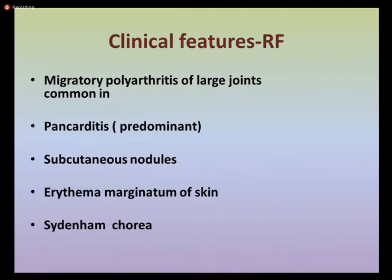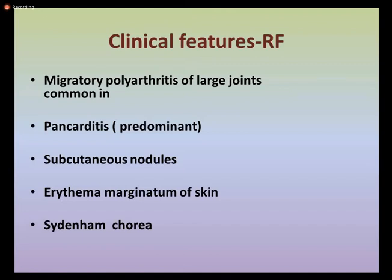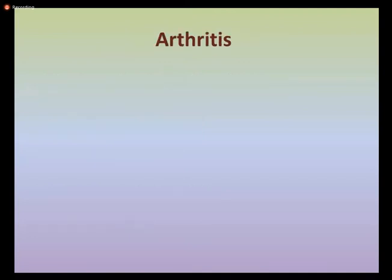The major clinical features of rheumatic fever include migratory polyarthritis of large joints — meaning the pain spreads from one joint to another. There is pancarditis, considered the predominant clinical feature. There is also formation of subcutaneous nodules and erythema marginatum of the skin. Erythema marginatum causes redness forming pink rings on the trunk and inner surfaces of the limbs. Another important feature is Sydenham's chorea, characterized by rapid, irregular, and aimless involuntary movements of the arms, legs, trunk, and facial muscles.